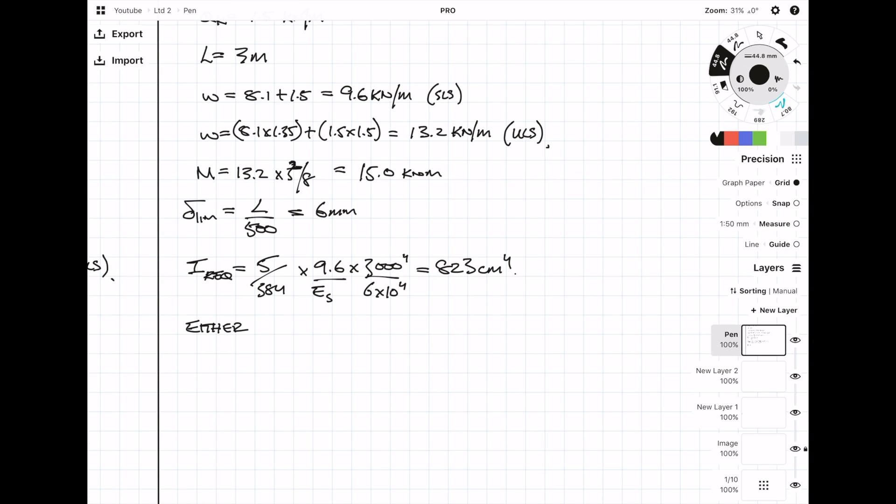We've worked out that the I value required is only 823, so we can specify a 203 UB or we can specify an even smaller beam which is 178 UB. In this instance, because I know this is a transfer beam and I know how tight the deflection is going to be, I'm going to pick the larger beam, the 203 UB.